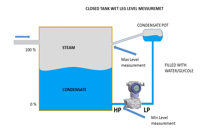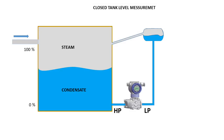If steam condenses, it will fill the low side impulse line. For this reason, we fill water in the low side and calibrate the transmitter. Let's see an example for wet leg level calculation. Assume that a tank is filled with steam. We have to measure the level using a DP level transmitter.